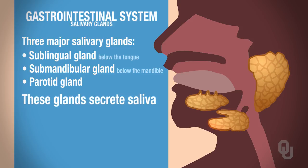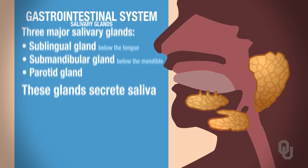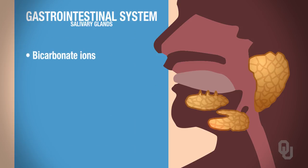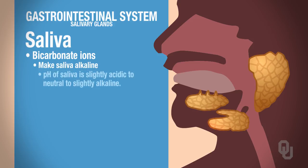They all secrete saliva, but let's look at what saliva contains. Saliva contains bicarbonate ions. Bicarbonate ions will attempt to make the saliva alkaline. Anywhere from slightly acidic to neutral to alkaline is the pH of the saliva. Some of the things that we eat and the various bacteria in our mouth can alter the pH. So these bicarbonate ions serve to make our mouth a little more neutral to somewhat alkaline.